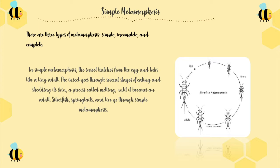There are three types of metamorphosis: simple, incomplete, and complete. In simple metamorphosis, the insect hatches from the egg and looks like a tiny adult. The insect goes through several stages of eating and shedding its skin, a process called moulting, until it becomes an adult. Silverfish, springtails, and lice go through simple metamorphosis.